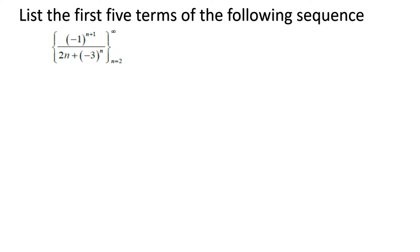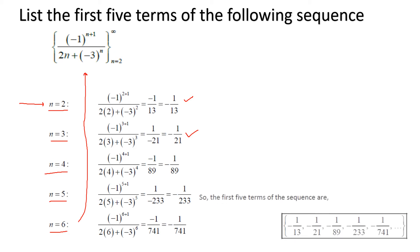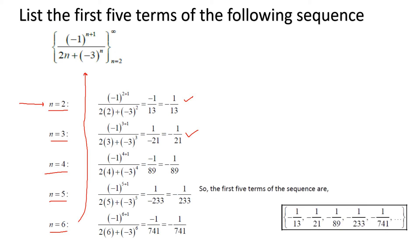The terms start from n equal to 2 to infinity. We obtain the first five terms: the first is minus 1 by 13. For n equal to 3 we obtain minus 1 by 21, and by the same pattern we obtain three more values by putting n into the above formula. So the first five terms of this sequence are listed here.